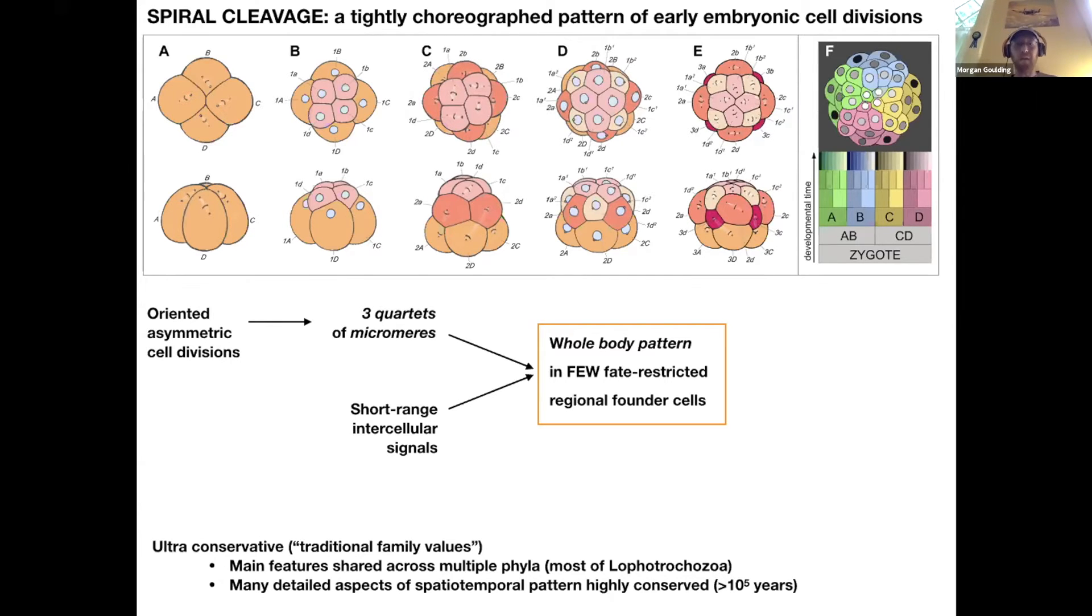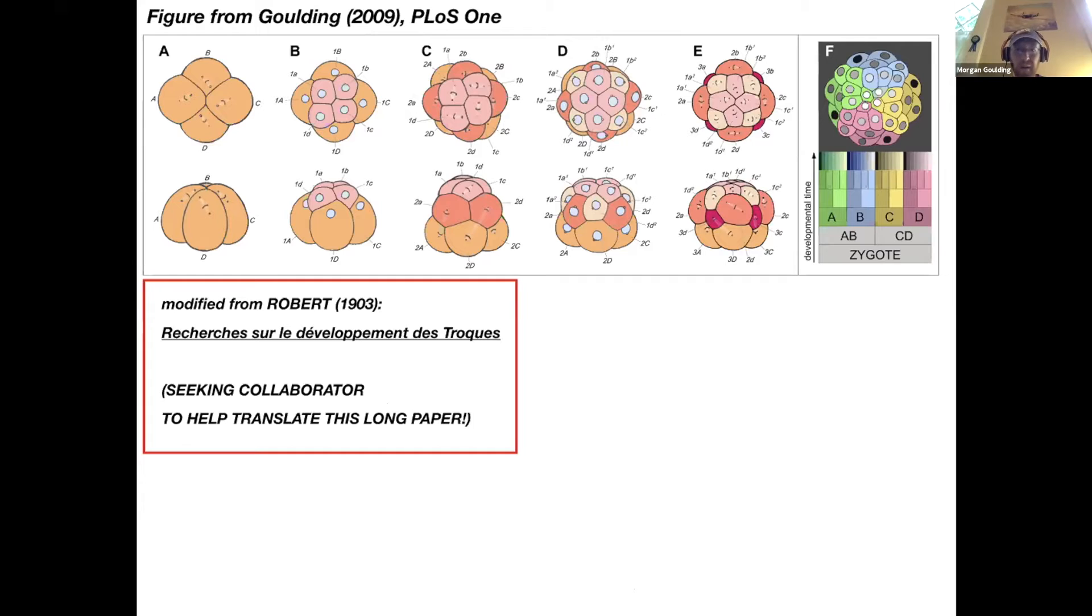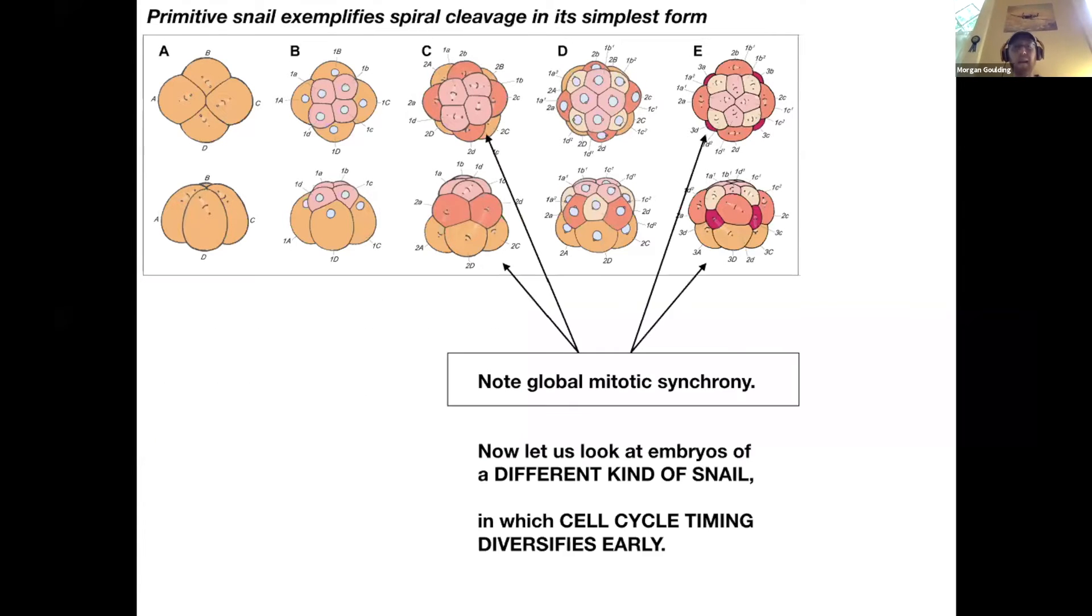In fact, we see very tight conservation of detailed aspects of this pattern in many clades. So this is the basic cartoon of spiral cleavage, and this is what I showed in this paper published a while ago. I stole it from Robert, who studied snail embryos in descriptive work from the turn of the last century. I want to point out that this cartoon shows a primitive snail to exemplify spiral cleavage in its simplest form. What you see here is all four cells of each tier are dividing in perfect synchrony.